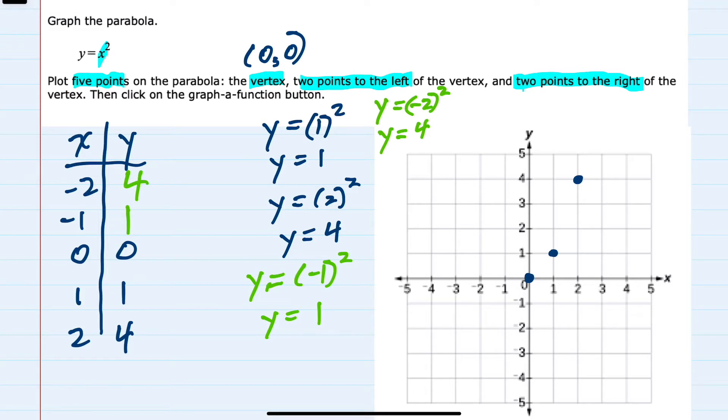So our two points on the left are (-1, 1) here and (-2, 4) here. And when we click the graph a function button, we have this parabola.